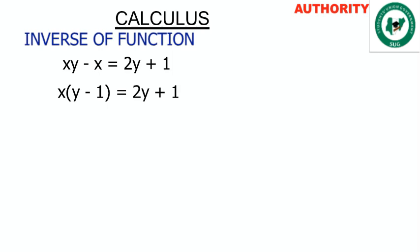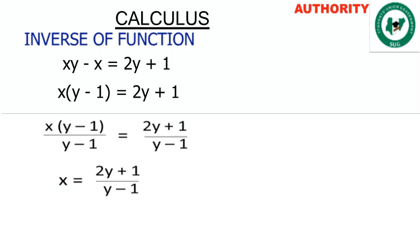We are interested in making x the subject, so we divide both sides by (y minus 1). We have x times (y minus 1) divided by (y minus 1) equal to 2y plus 1 divided by (y minus 1). The (y minus 1) cancels, and x stands alone. So we have x is equal to 2y plus 1 all over y minus 1.